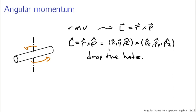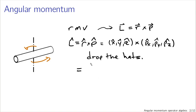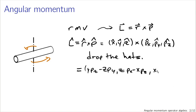This is an operator algebra lecture after all. If you actually do the cross product between the X, Y, Z operators and the PX, PY, PZ operators, you end up with: Y PZ minus Z PY — that's the X component; Z PX minus X PZ — that's the Y component; and X PY minus Y PX — that's the Z component.